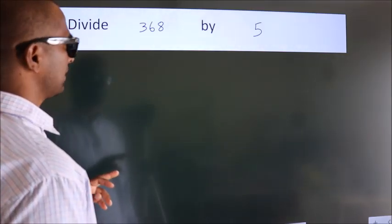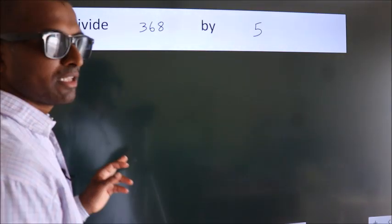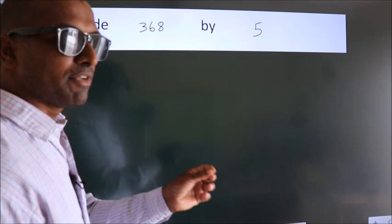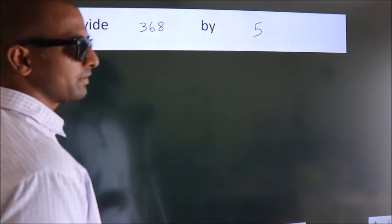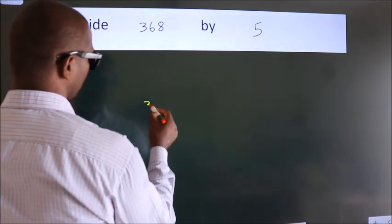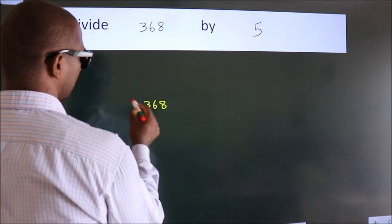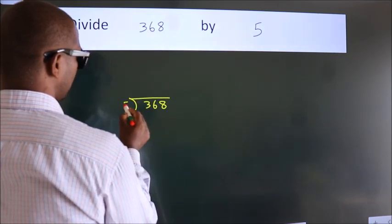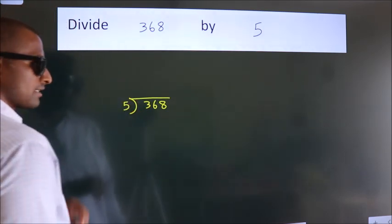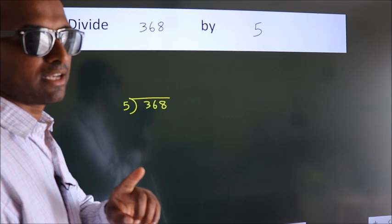Divide 368 by 5. To do this division, we should frame it in this way: 368 here, 5 here. This is your step 1.